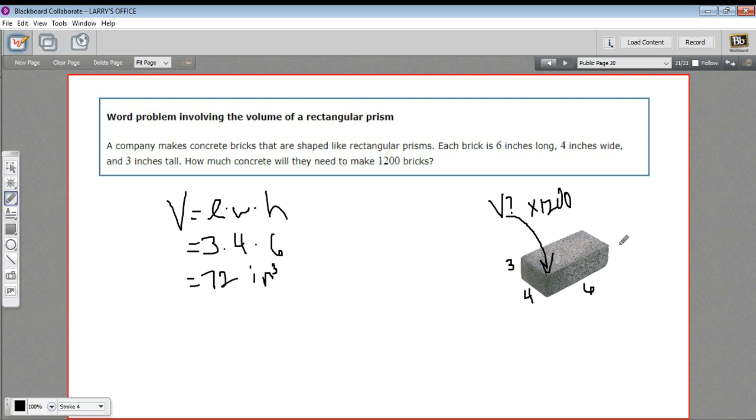So it takes 72 cubic inches of concrete to make one of these bricks. To make 1,200 bricks, we need to multiply that by 1,200. So 72 times 1,200, let me just pull out my calculator here, and that looks like 86,400 cubic inches of concrete to make 1,200 bricks.